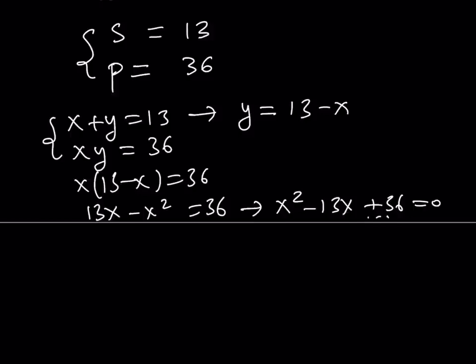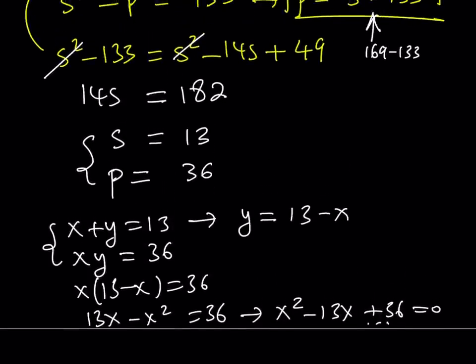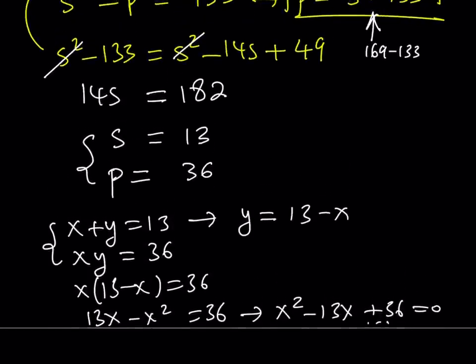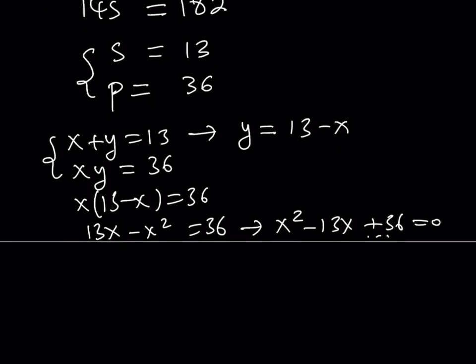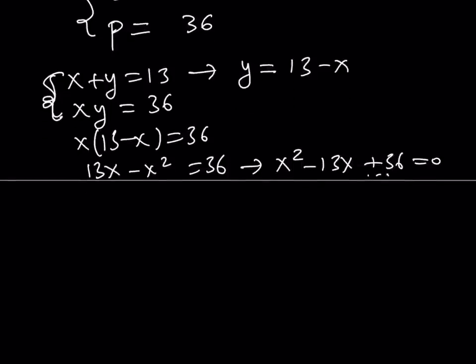And since x and y are interchangeable, when we solve for x, we're basically finding all the values for x, y. Now, you can also look at this equation from another perspective. If you consider this system right here, we're kind of talking about two numbers whose sum is 13 and whose product is 36. And obviously, those numbers are very easy to find. I know guess and check is not liked by everyone, but if you solve the quadratic by using the formula, if you don't like guess and check, you'll find the same answer.